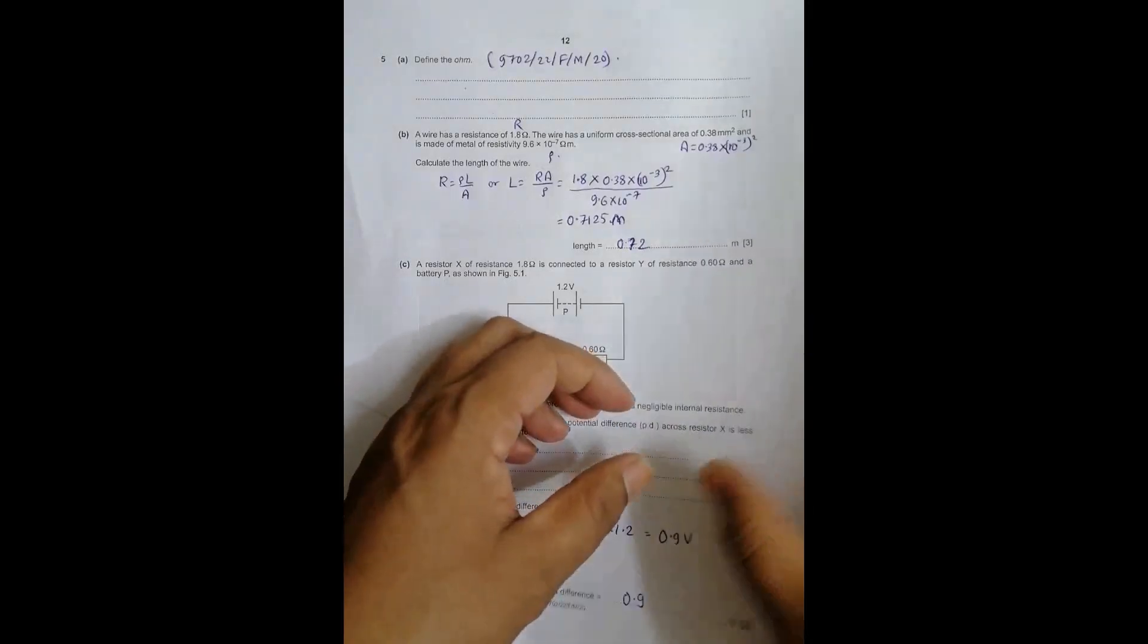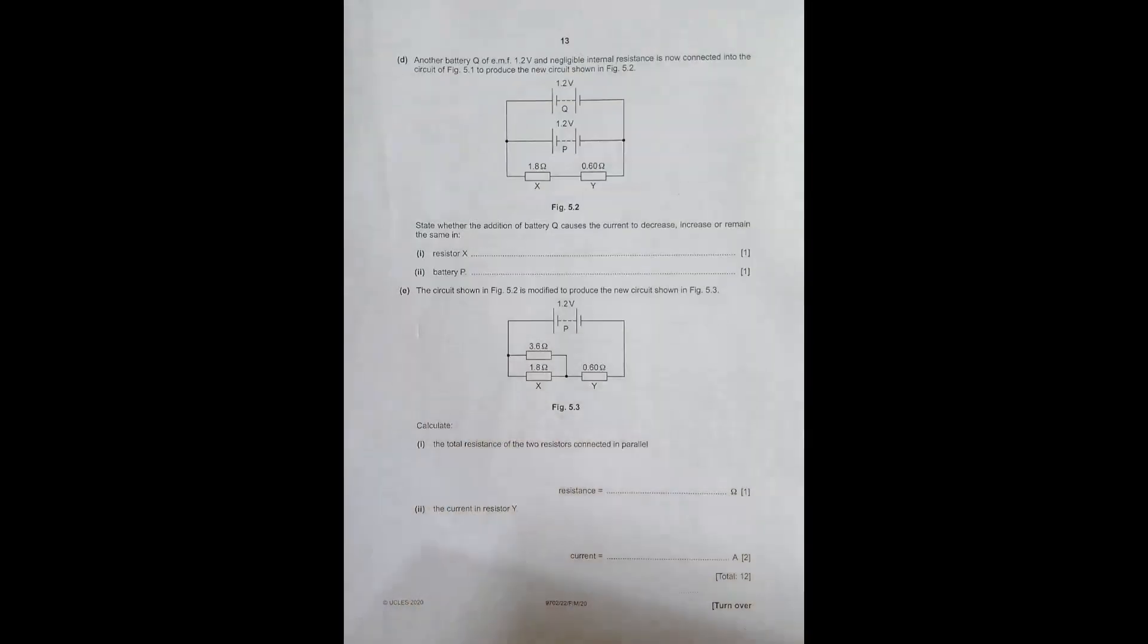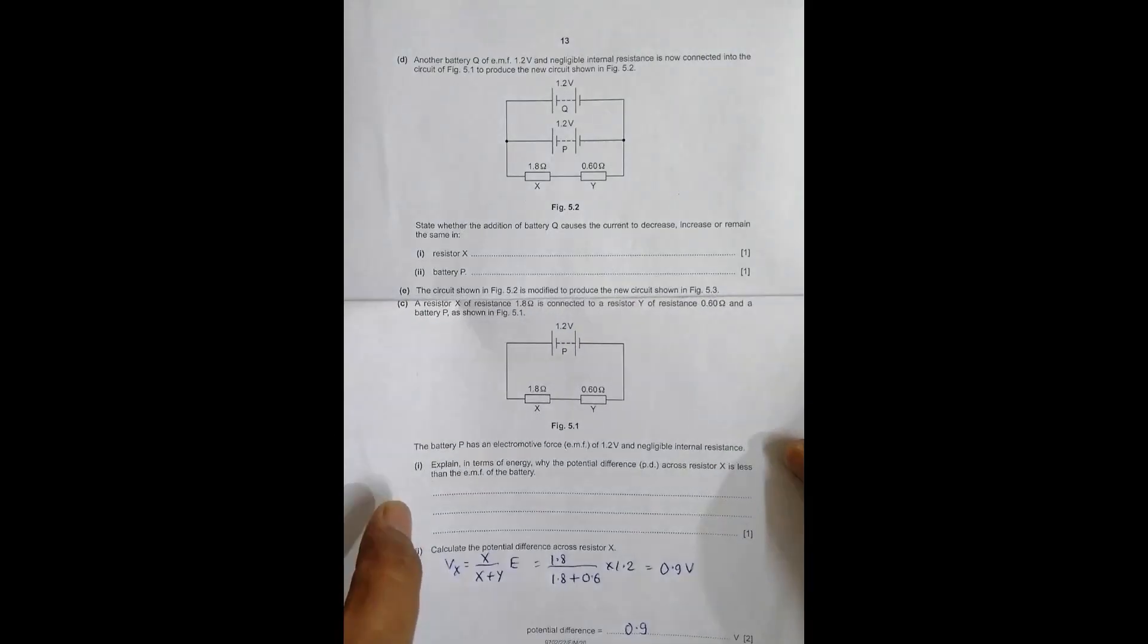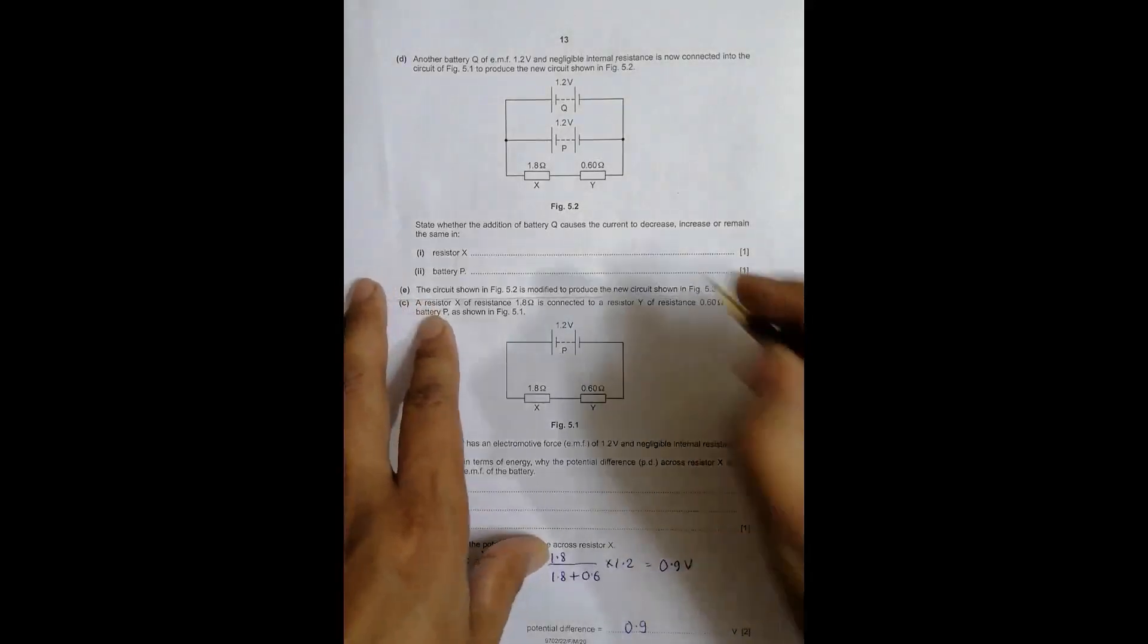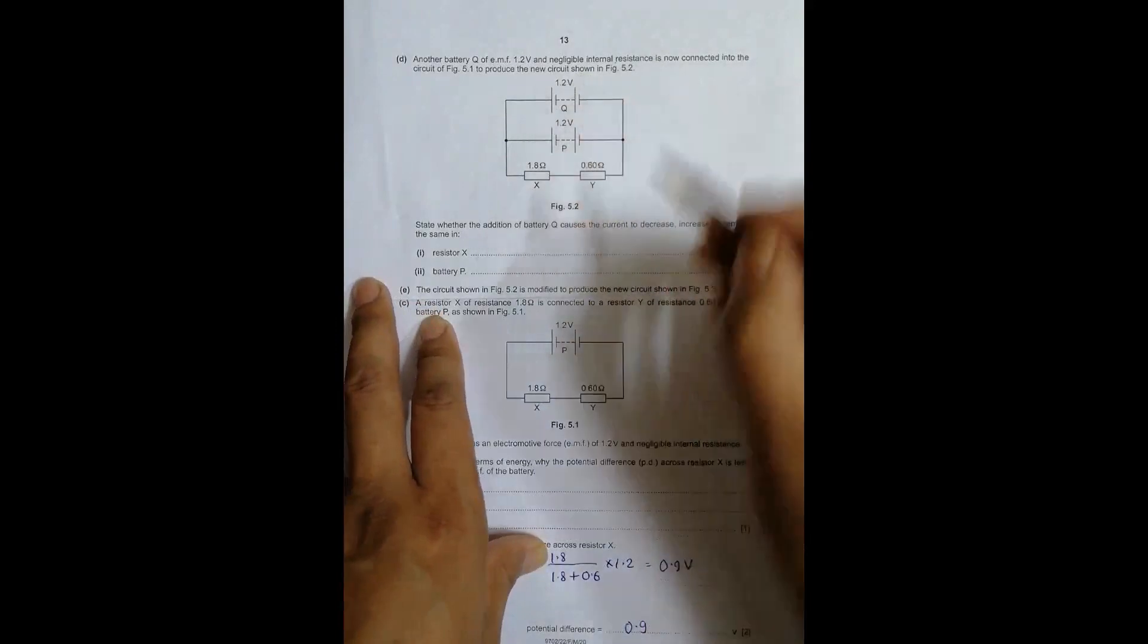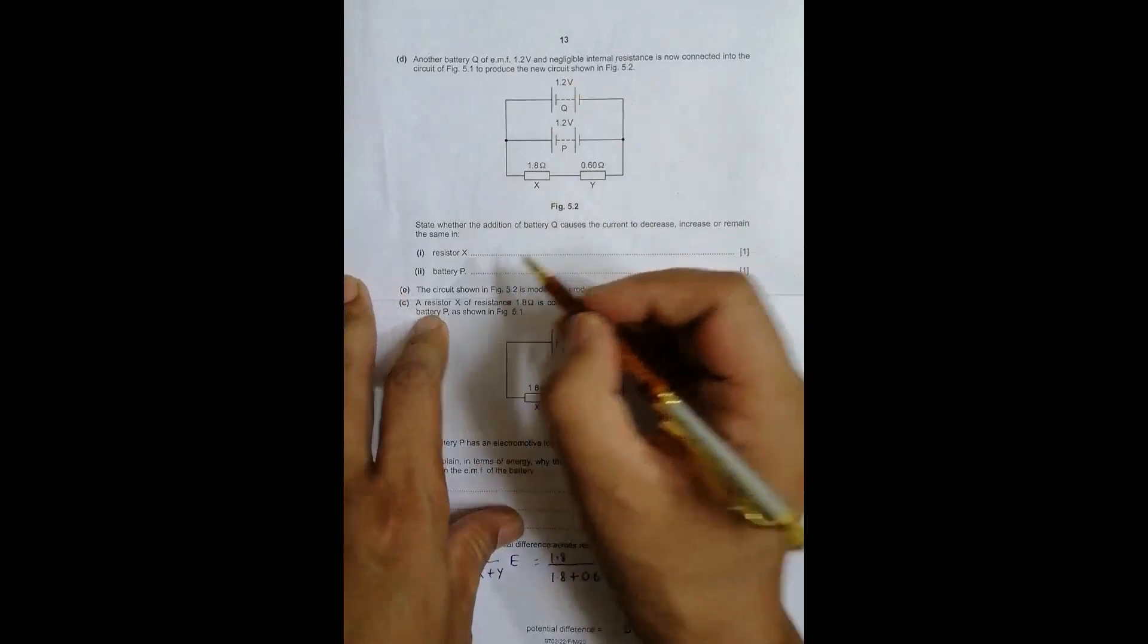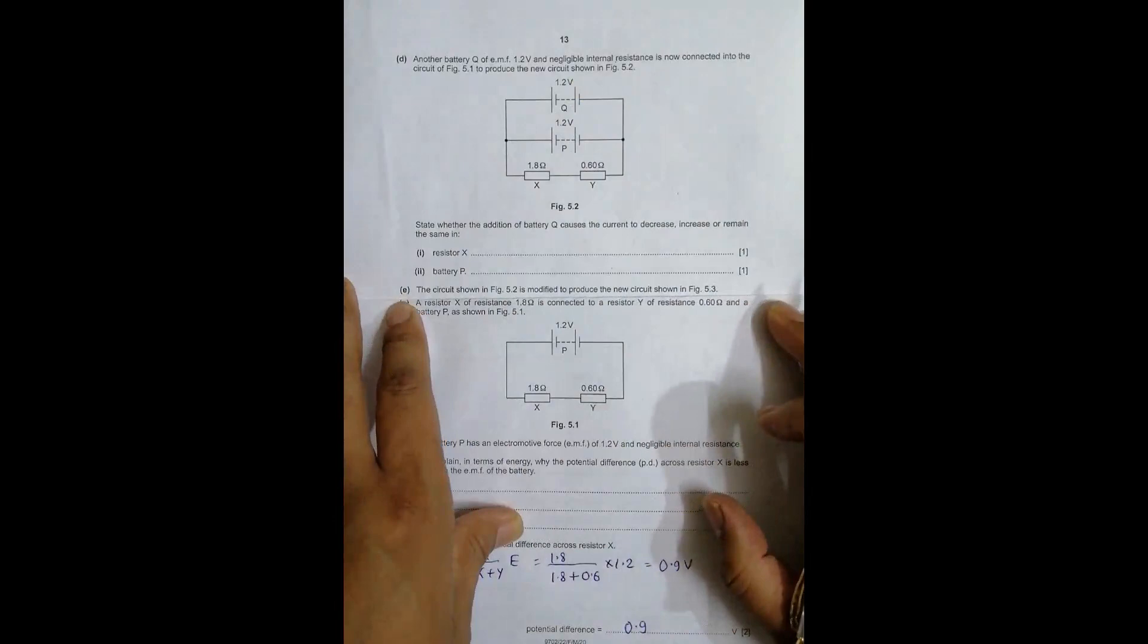On the next page, another battery Q of EMF 1.2 volts and negligible internal resistance, very much alike to P, is now connected into the circuit to produce a new circuit in figure 5.2. We have added battery Q alongside P. State whether the addition of battery Q causes the current to increase, decrease, or remain the same in resistor X and battery P.